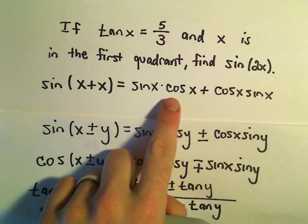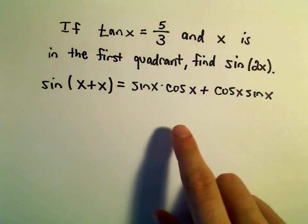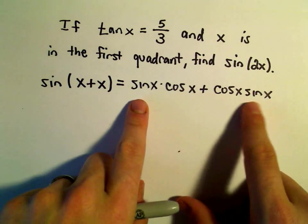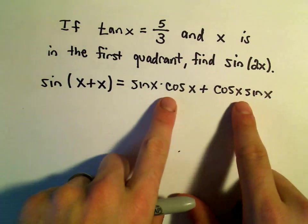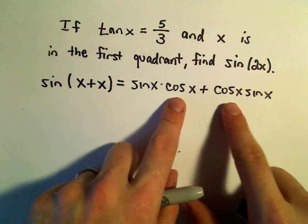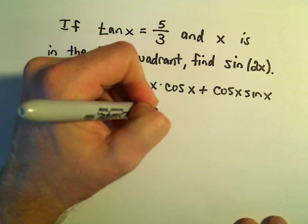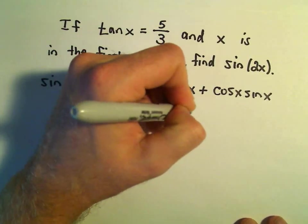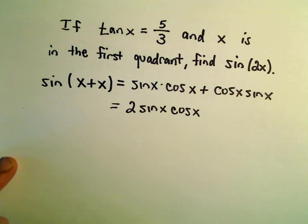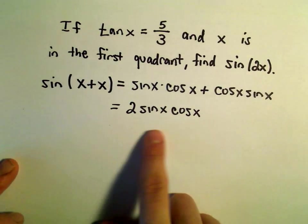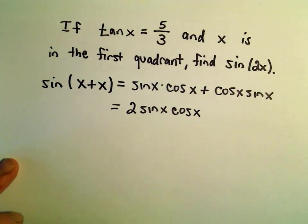But this is multiplication now. Sine times cosine, cosine times sine, it doesn't matter the order in which we write it. So we've got a sine times a cosine, another sine times a cosine. So we get the identity 2 sine x times cosine x. So the identity for sine of 2x is simply 2 sine x times cosine x.